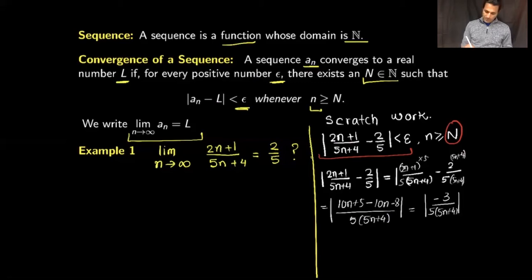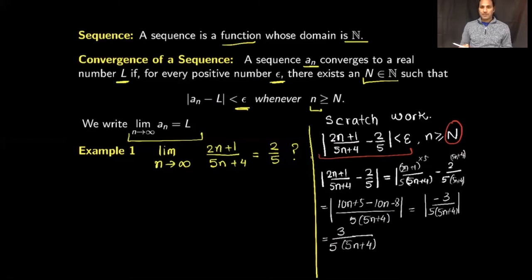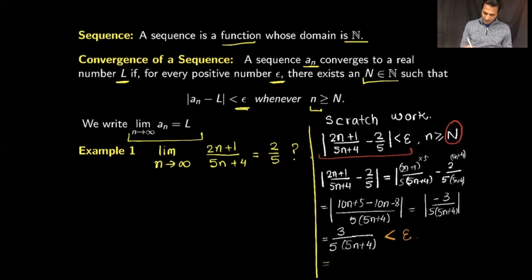Since the denominator is positive, the absolute value is simply 3 / (5(5n+4)). Now I want to make this less than epsilon. Multiplying both sides by 5 and dividing by 3 gives 1/(5n+4) < 5ε/3.